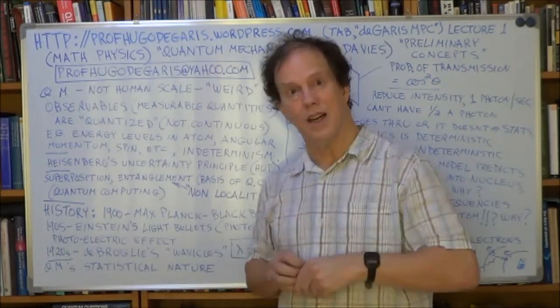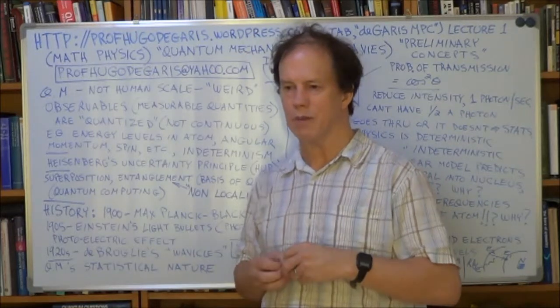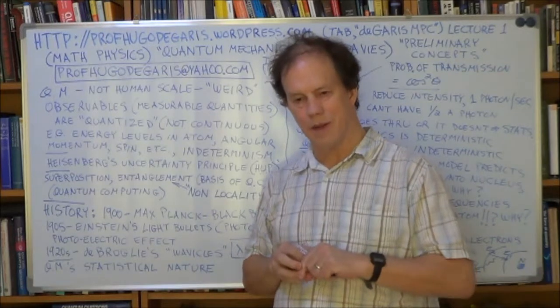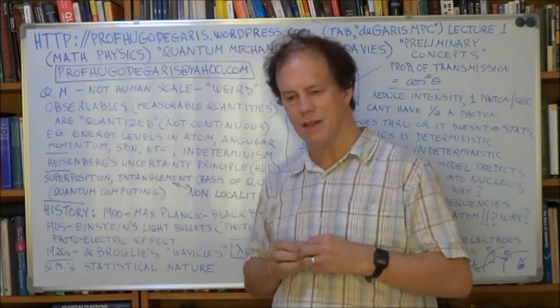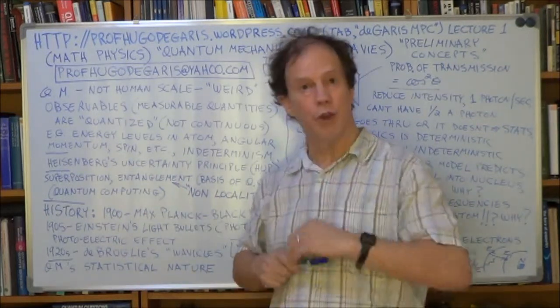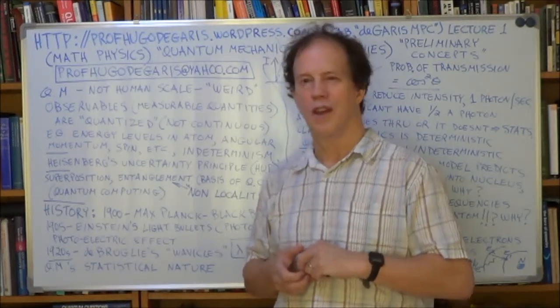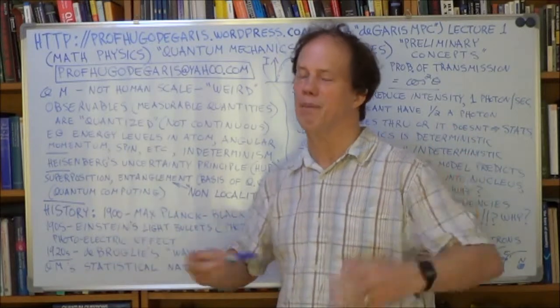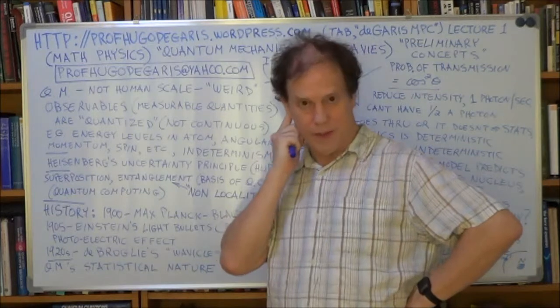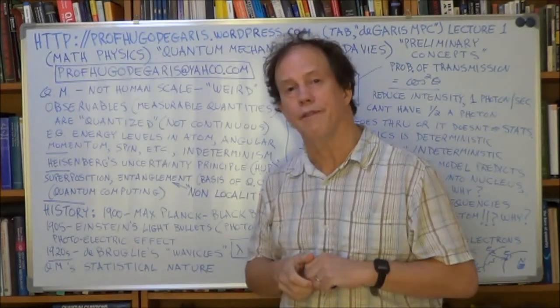So they sent the thesis off to Einstein, who by that stage, in the 20s, Einstein was a very big name by then. I mean, world famous, because his general relativity had come out in 1915, and 1919, his prediction that light would bend as it approached the sun was confirmed. So Einstein was like a rock star. He was super famous, right? He was a household name.